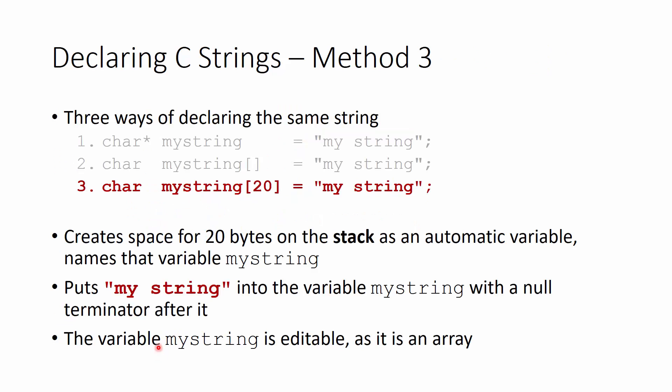The third way explicitly states how many bytes you're asking for — in this case, 20 characters. Since all characters take up one byte, it's also 20 bytes. This creates space for 20 bytes on the stack as an automatic variable. Otherwise, it's exactly the same as the previous example. You can edit this array since it has been declared on the stack, not in the read-only portion of the data segment.